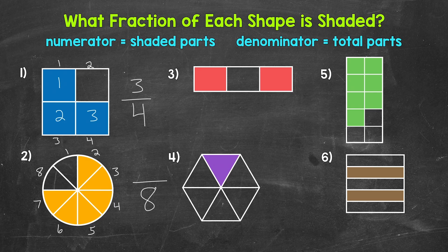Now for the numerator, how many equal parts have been shaded? One, two, three, four, five, six. So our numerator is six. We have six out of eight parts shaded. Our fraction is six over eight, which we say six eighths.